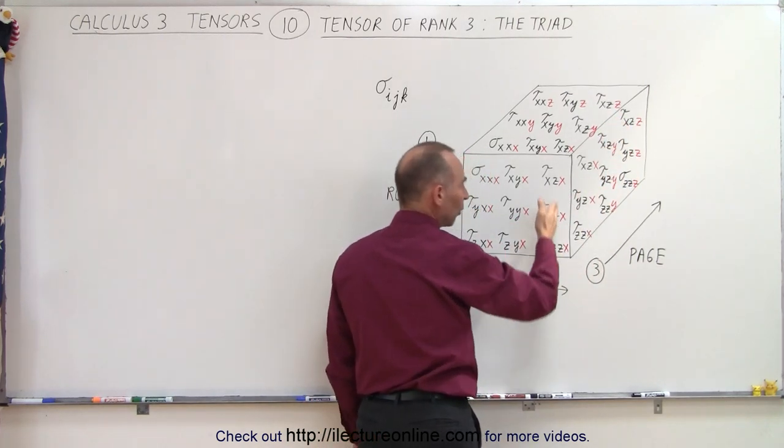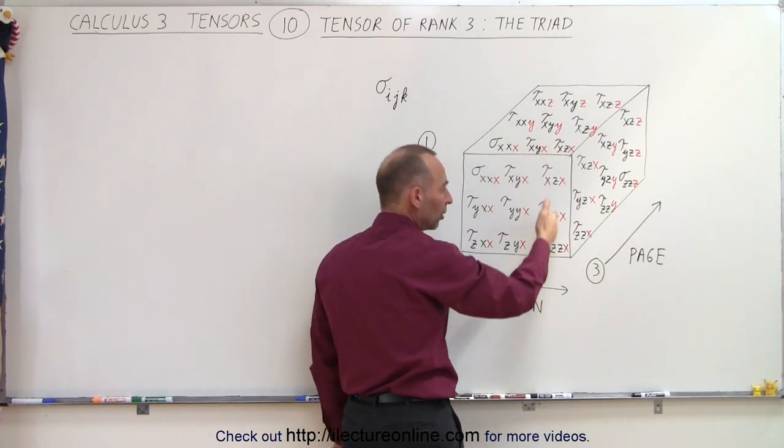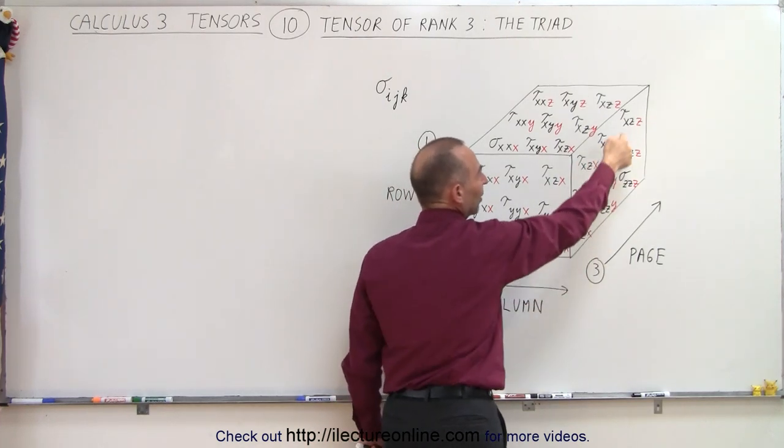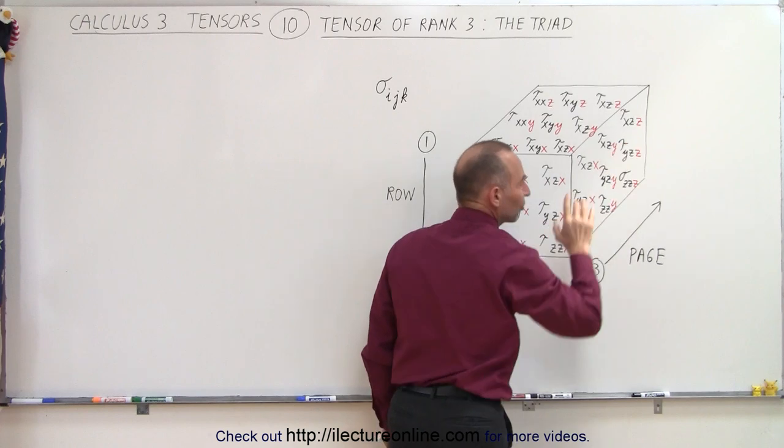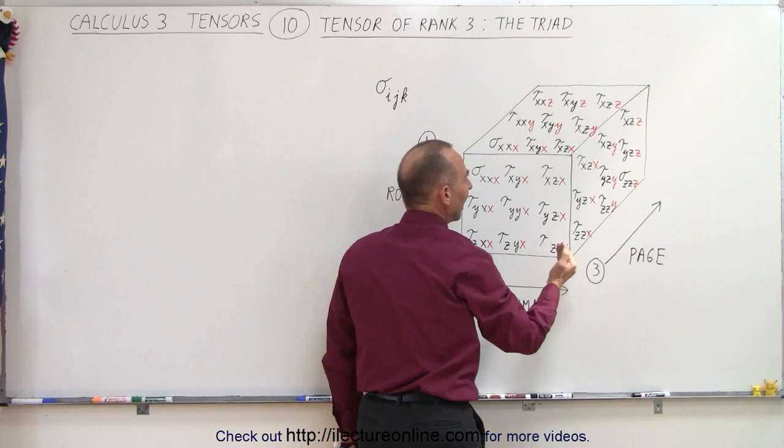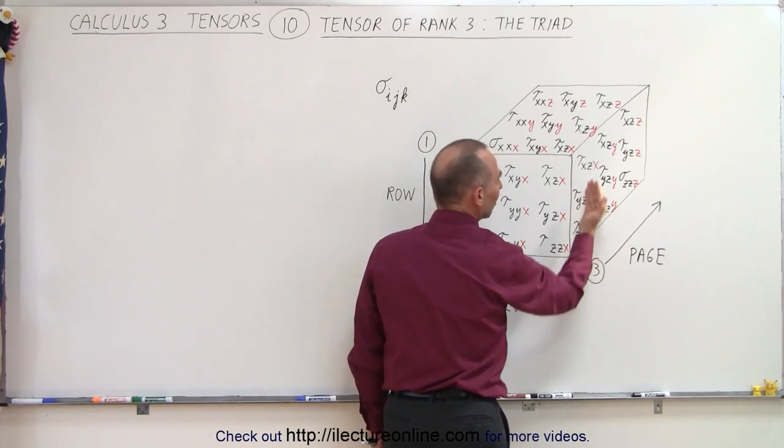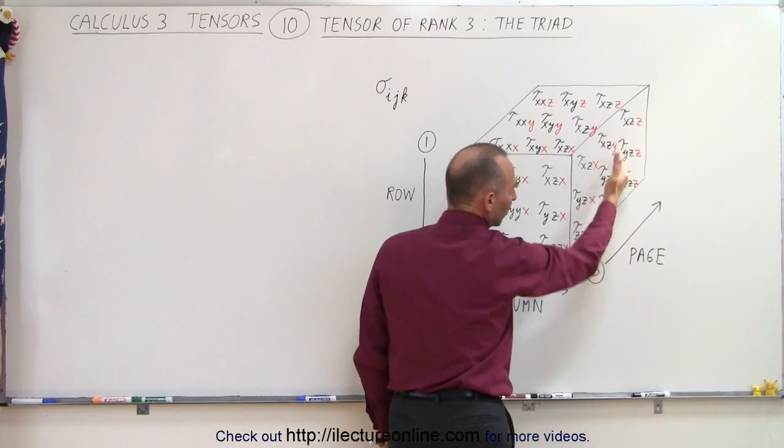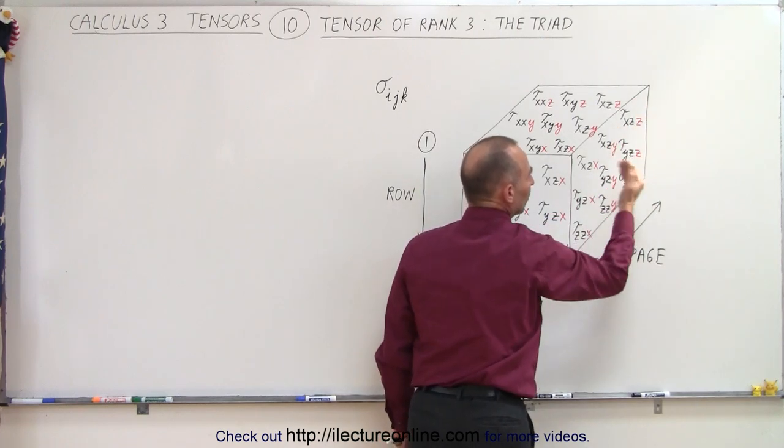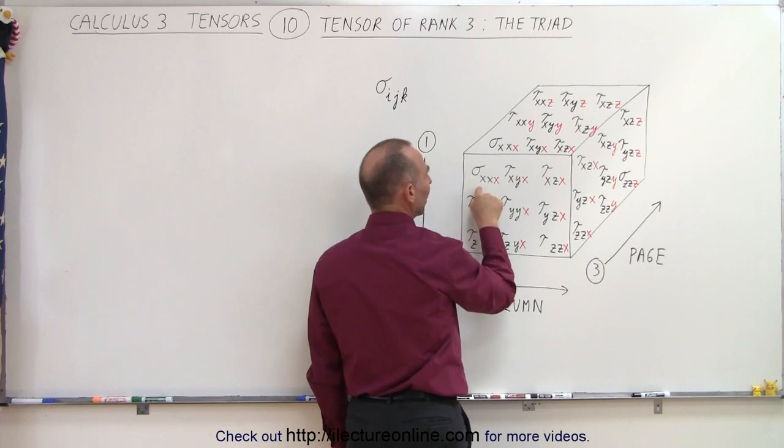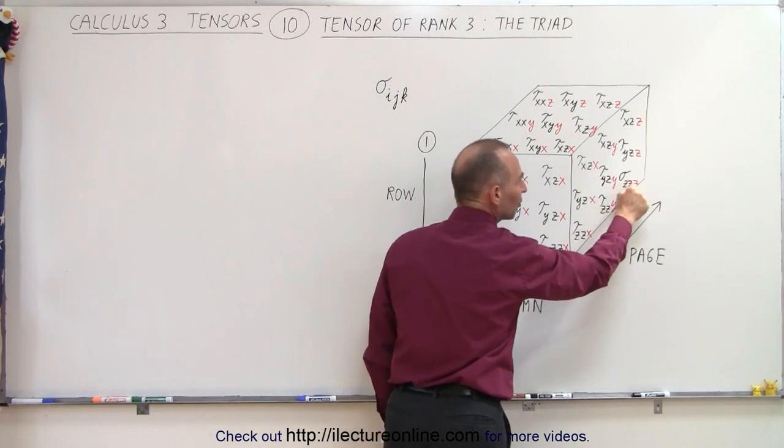Going from left to right, since we're only looking at the right column here, all the second subscripts will be Zs for every one of these nine components. And then for the third subscript, the front page would have a component X, the second page would have component Y, and the third page would have component Z. Notice that we have the top left corner X, X, X, the bottom right corner Z, Z, Z.